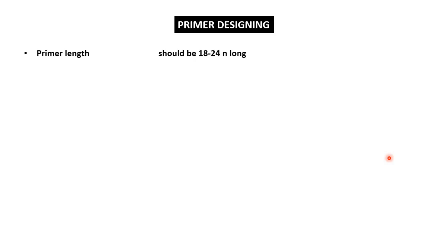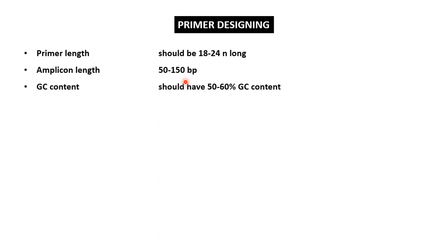When designing the primer, the following points should be considered. First is primer length — it should be around 18 to 24 nucleotides long. A shorter primer will not bind tightly to the template and has the tendency to anneal at non-specific positions, whereas a longer primer will take too much time to anneal and denature. Second, real-time PCR is useful for amplification of shorter DNA fragments from 50 to 150 base pairs, compared to conventional PCR which can amplify up to 500 nucleotides. Third, the primer should have a GC content of around 50 to 60%, as this range provides firm annealing to the target DNA while allowing easy removal during the denaturation phase.